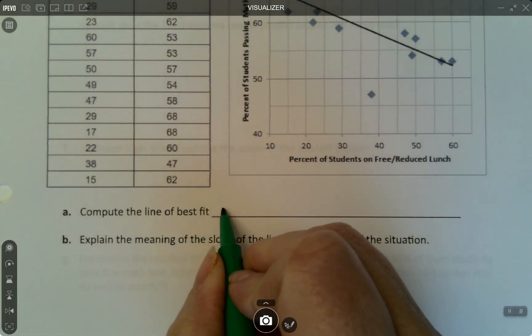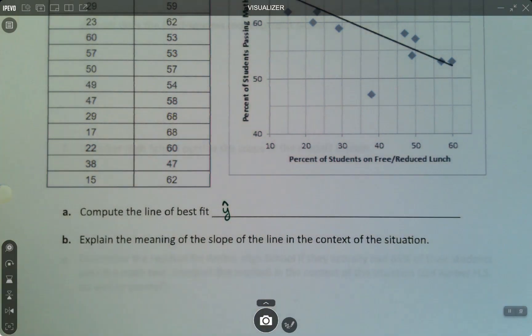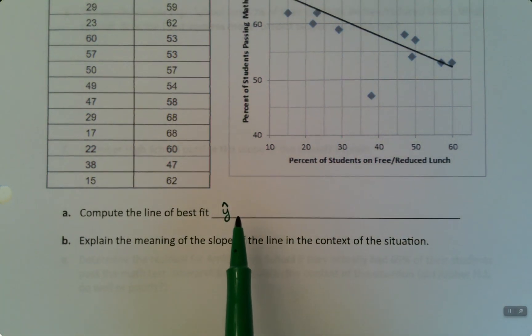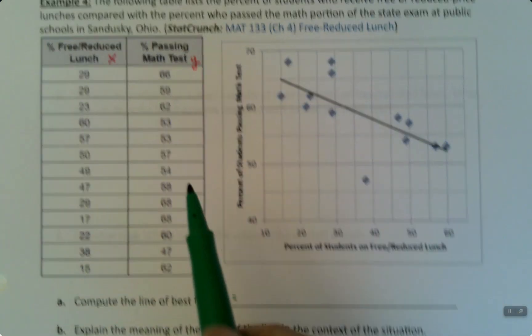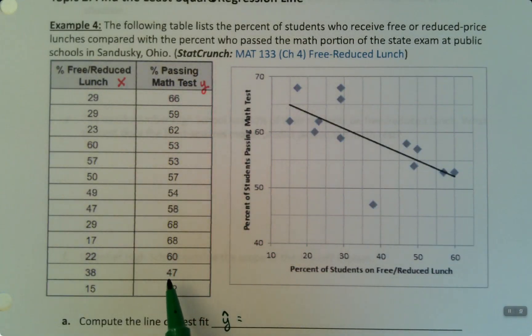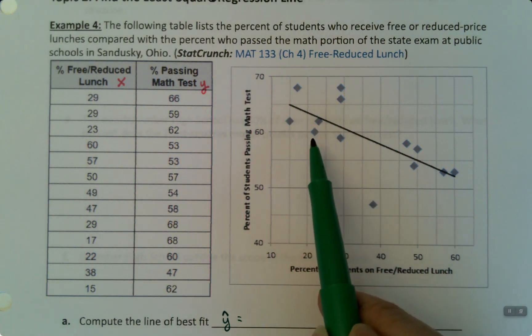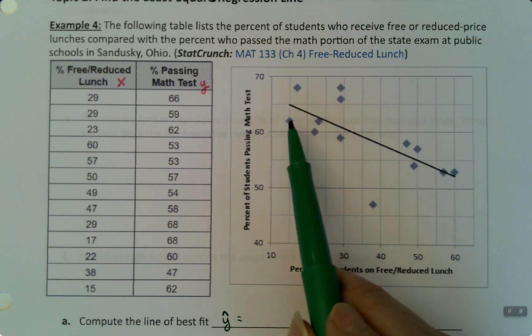So we'd say Y hat, and just a little side note as a student, don't get confused about why is Y hat? Why isn't it Y? So the Y values are these real values. These are the Y's. Y hats are the line.